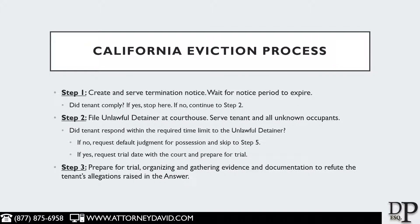Now I'm going to briefly go through a step-by-step process of what a typical eviction case might look like. Please note that this is a very simplified process, and your case may be more complex. Step number one, the landlord is going to need to create and serve a termination notice on the tenant. This might be a three-day notice, it might be a 30-day or a 60-day notice. The landlord then needs to wait for the notice to expire. Did the tenant comply and do what the notice told the tenant to do? If yes, then there's nothing else for you to do. But if the tenant did not comply with the notice, then you've got to move on to step number two.